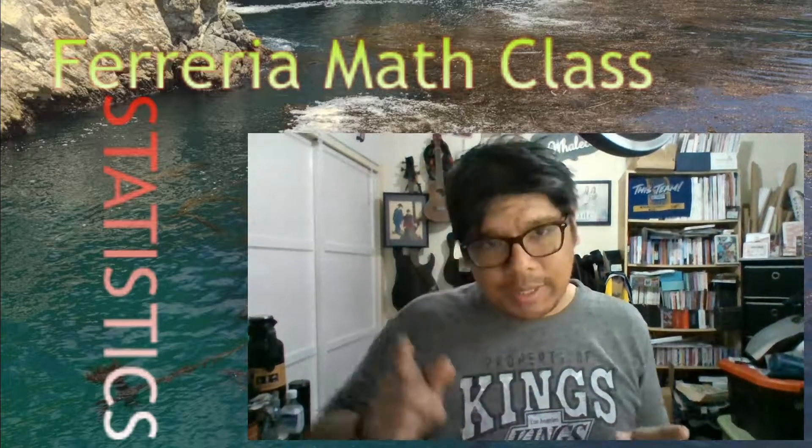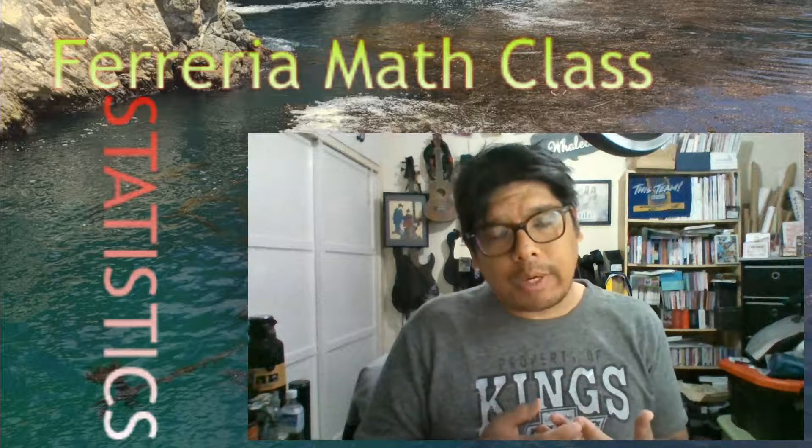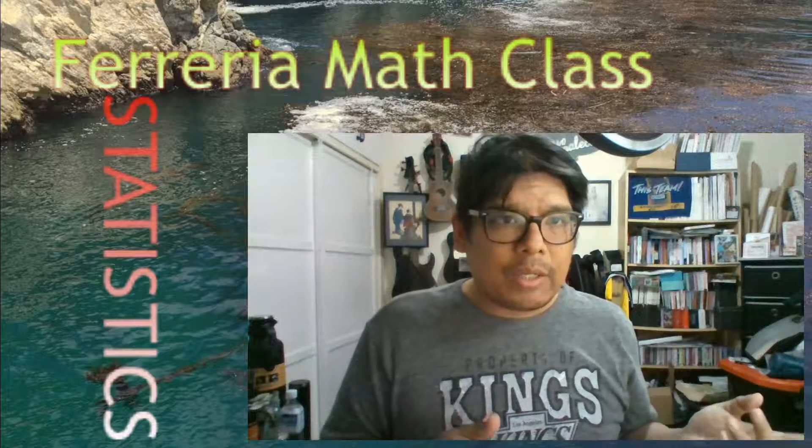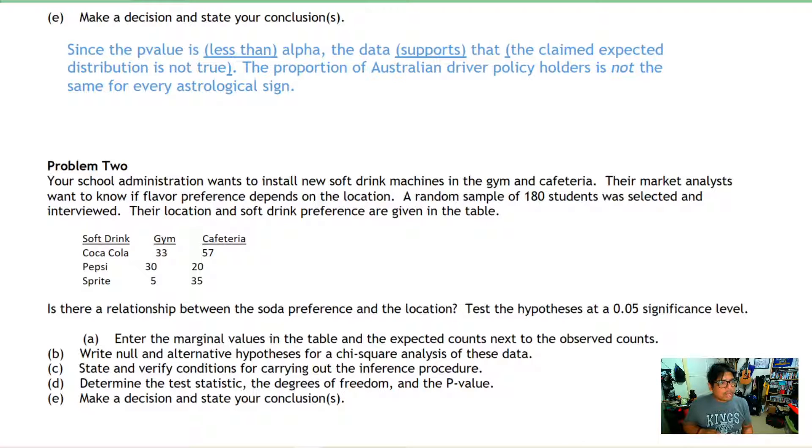Hey everyone, we're back for more AP Statistics practice tests, looking at chi-square distributions and how we use them for inference and hypothesis tests. Let's get started. Your school administrator wants to install a new soft drink machine in the gym and cafeteria. Their market analysis wants to know if flavor preference depends on location. A random sample of 180 students were selected and interviewed. Their location and soft drink preferences are given in the table.